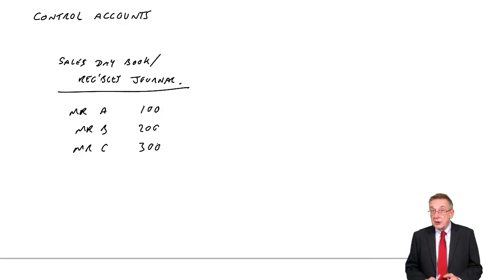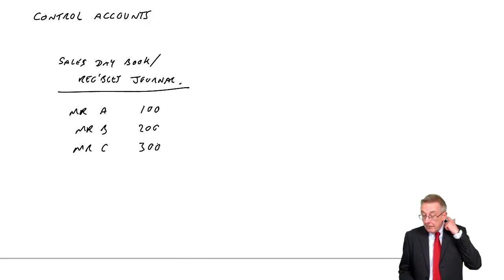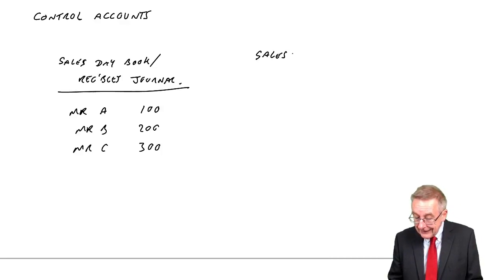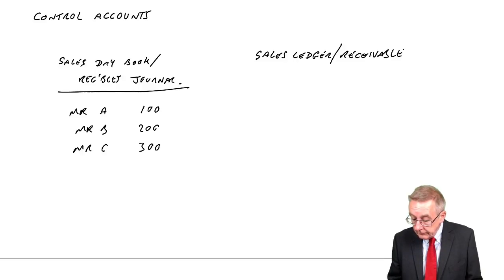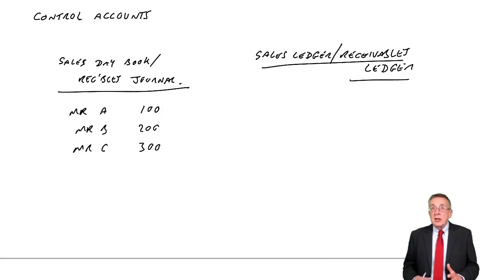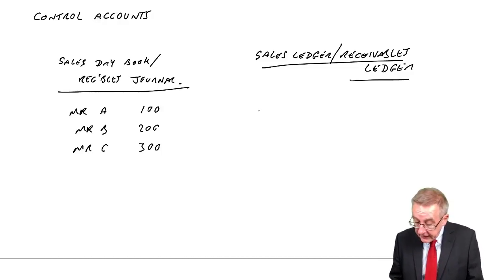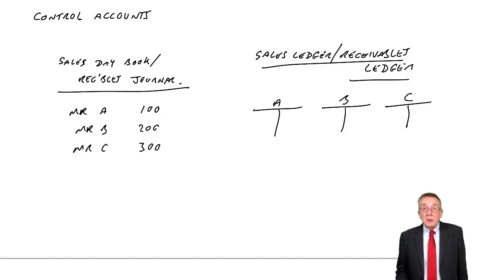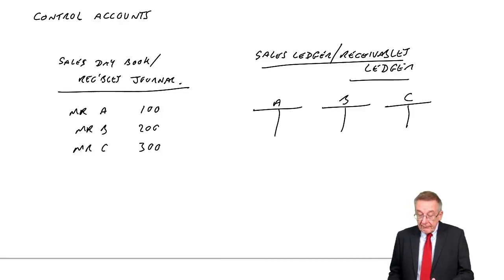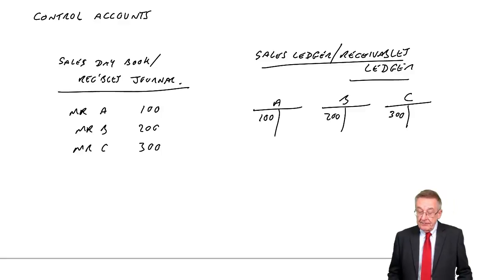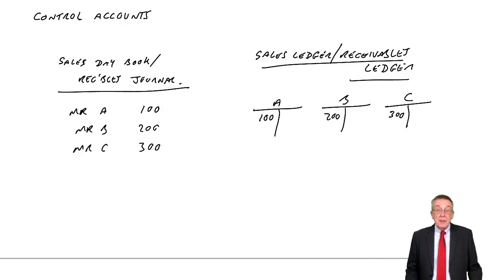But so far, if you remember, there'd be no double entry. At the same time, we'd be making a note of how much each customer owed us in the sales ledger — or, the other name, the receivables ledger. Where, if you remember, this isn't double entry, it's just a note. But in this ledger we had a page for each individual customer: Mr. A, Mr. B, Mr. C. And we'd make a note of what they owed us. So Mr. A owes us 100 — we'd put a debit on Mr. A's page; B owes us 200; C owes us 300. But still no double entry — we just made a note.